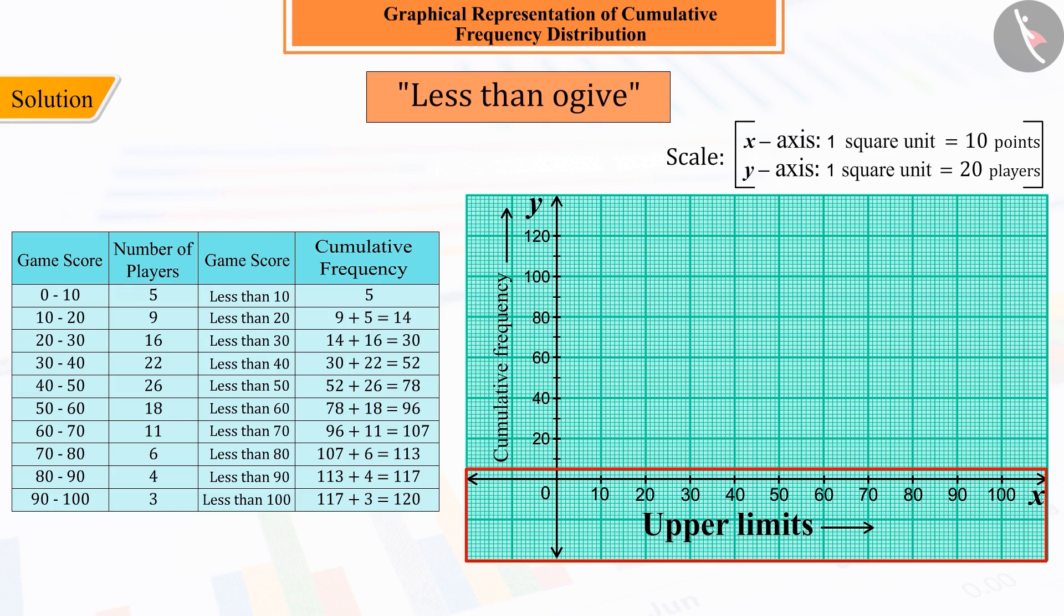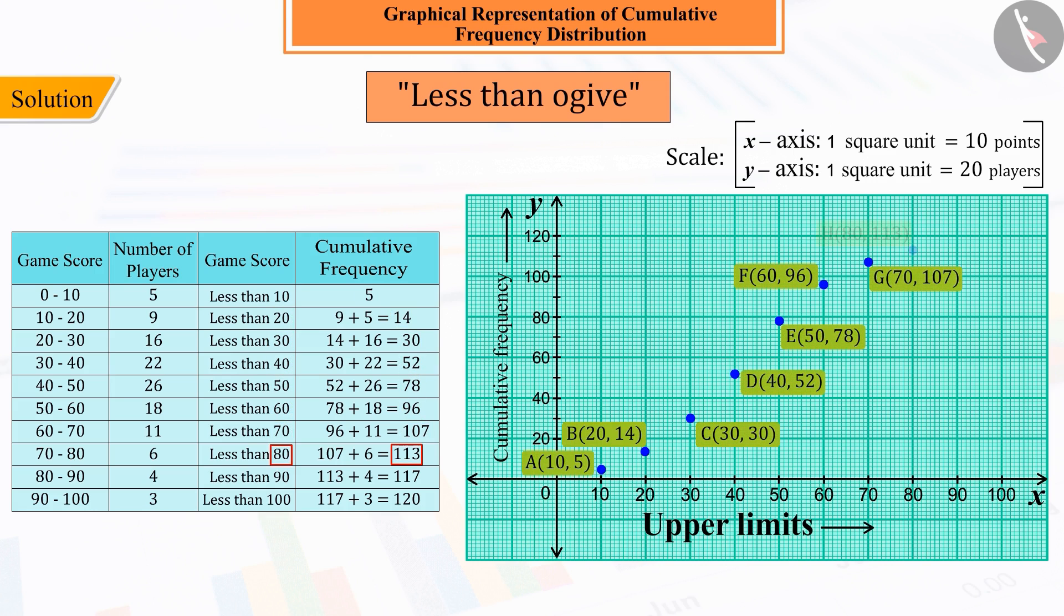Let us now plot the corresponding points A, B, C, D, E, F, G, H, I and J of all these upper limits and the corresponding pairs obtained with the corresponding cumulative frequency.